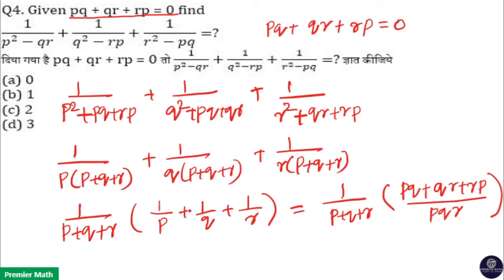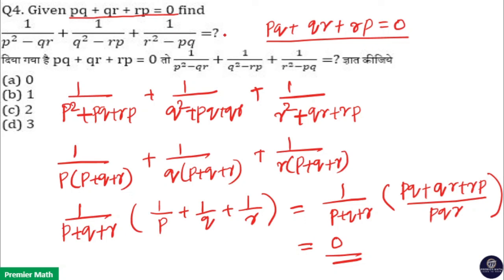Here, pq + qr + rp = 0, which means the numerator is 0. Therefore the result is 0. So option A is your answer.